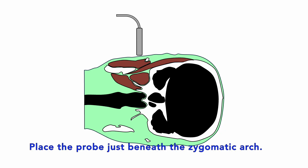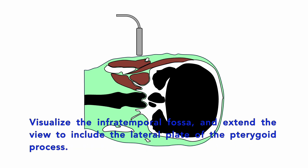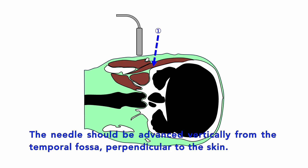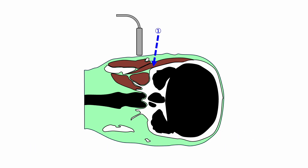Place the probe just beneath the zygomatic arch to visualize the infratemporal fossa and extend the view to include the lateral pterygoid plate. The needle should be advanced vertically from the temporal fossa, perpendicular to the skin. It is safest to contact the sphenoid bone within the temporal fossa.